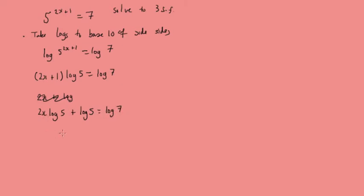So we've got 2x log 5 plus log 5 equals log 7. Now we're just going to solve for x. So we'll have 2x log 5 equals log 7 minus log 5, and we'll have 2x equals log 7 minus log 5 over log 5. Now we put this into our calculator and we'll get to 3 significant figures, 0.105. And that's the solution.